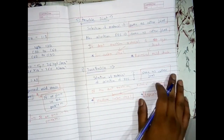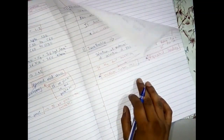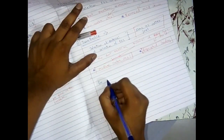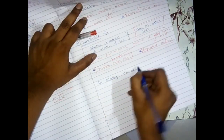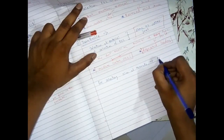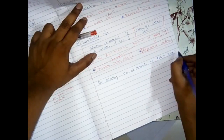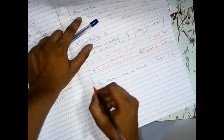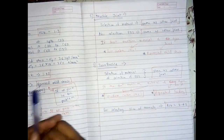For selecting the size of threads in the turnbuckle, we will use PSG 5.42. Now open PSG 5.42.